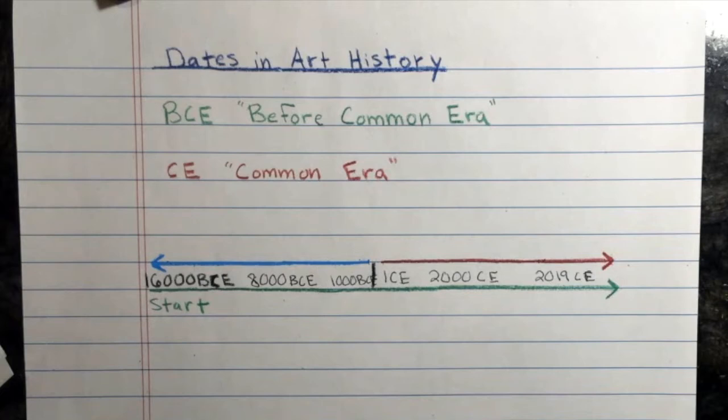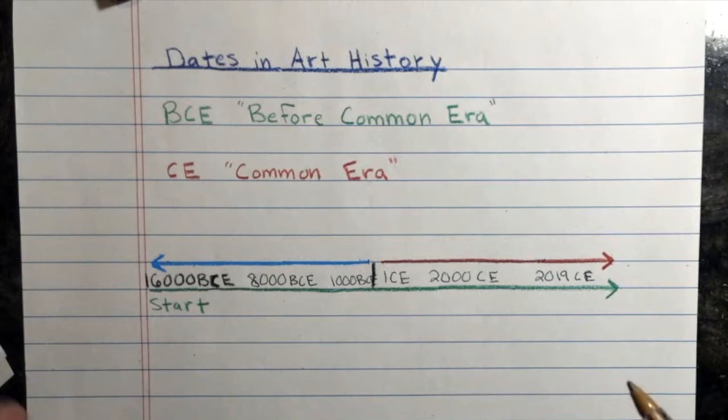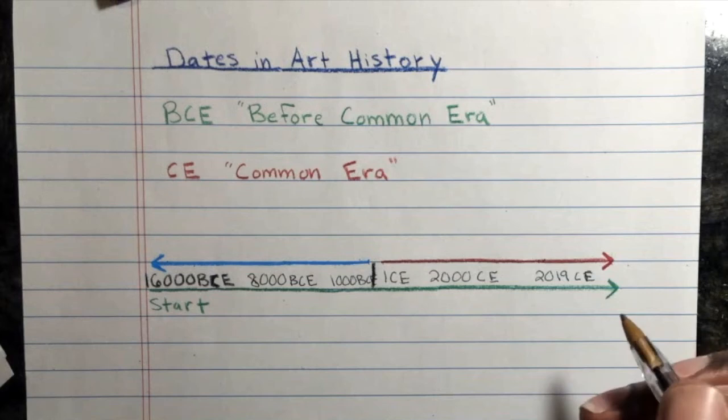You don't necessarily need to write CE unless you're being completely specific with the year. Typically, you won't see CE in our current dating system — we don't write 2020 CE or 1988 CE.